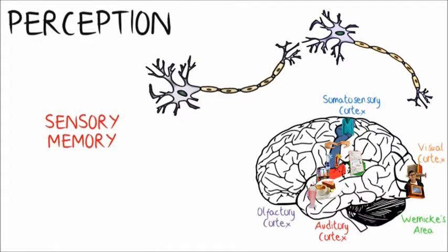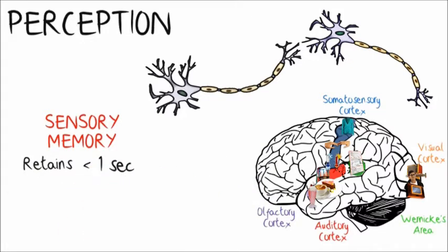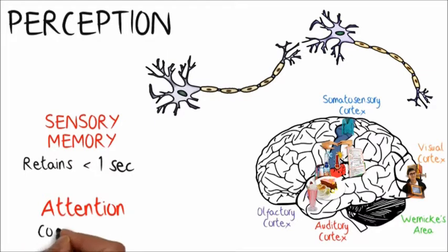Therefore, sensory memory retains these impressions, although it decays in less than a second. To deal with the huge amount of information around us, attention prioritizes elements that should be processed ignoring the others, acting like a cognitive filter.